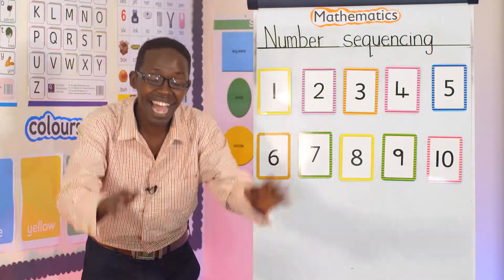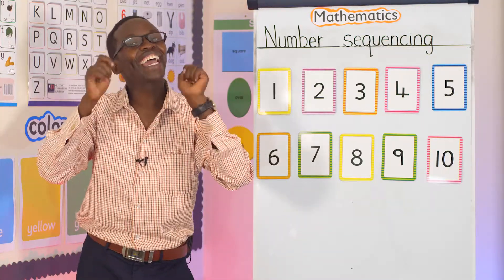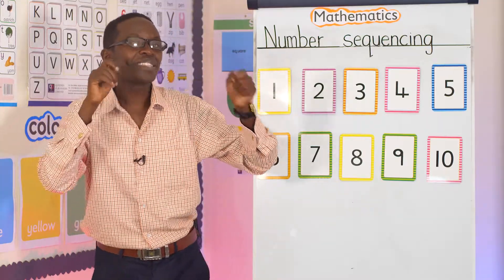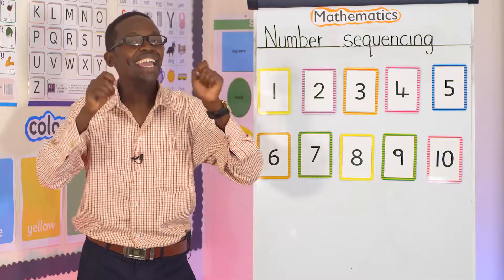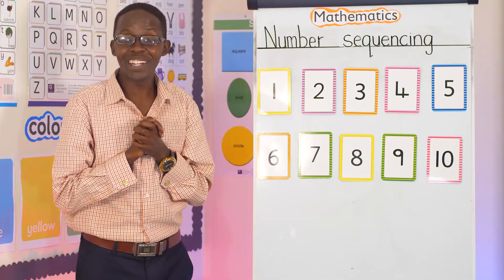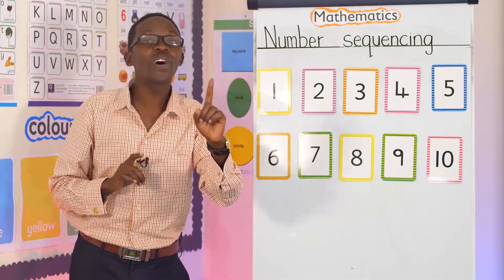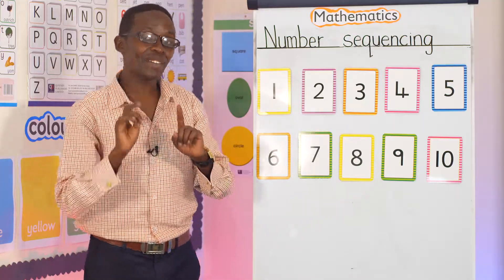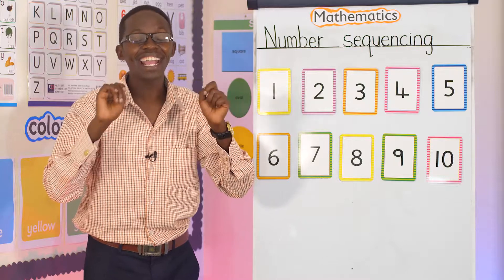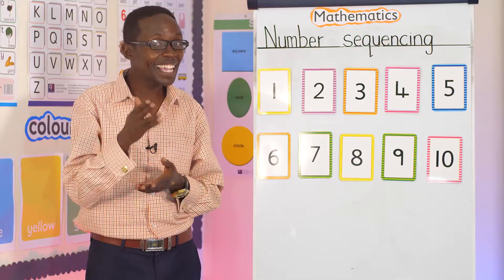Shake again. Down for the mangoes. Again. Shake, shake the mango tree. The mango tree, the mango tree. Shake, shake the mango tree. Down for the mangoes. One, two, three, and four, five, six, seven, eight, nine, ten. Shake again. Down for the mangoes. Do you like mangoes?